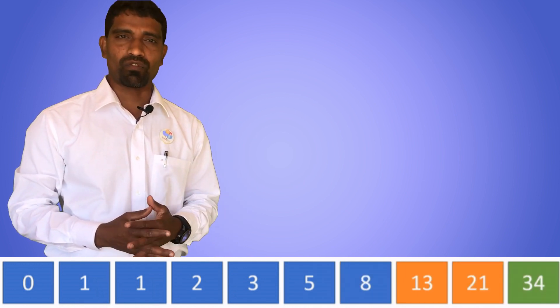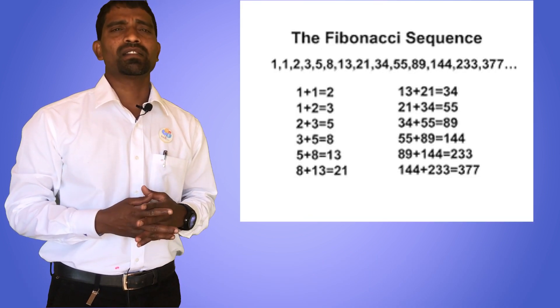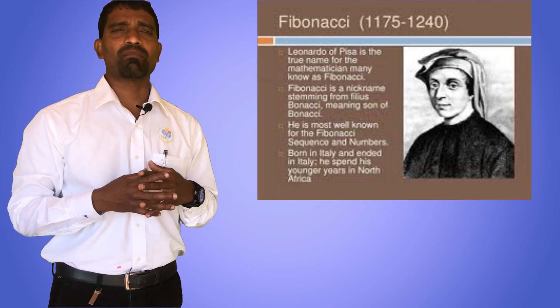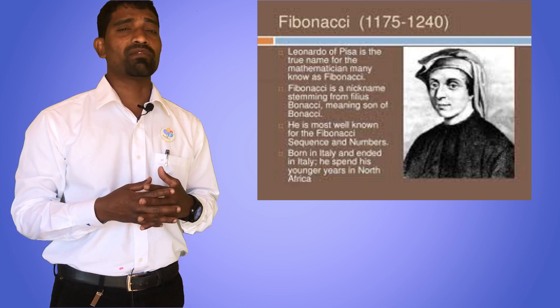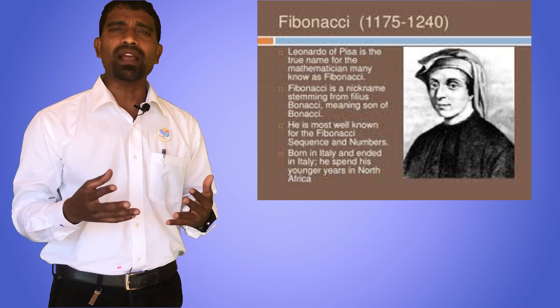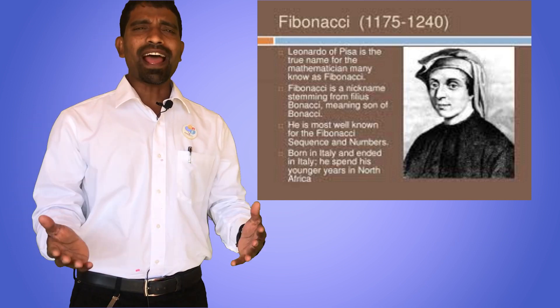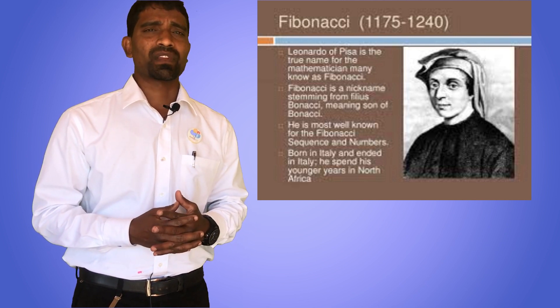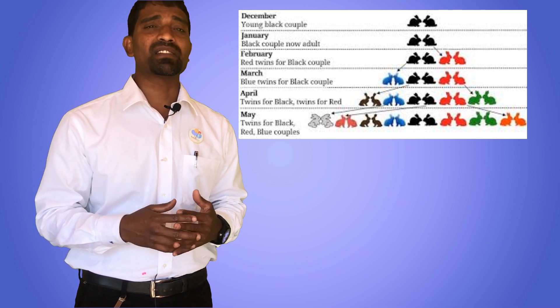This sequence is called the famous Fibonacci sequence because it was discovered by one of the famous mathematicians from Italy who lived in the 12th century, known as Leonardo Fibonacci. Fibonacci noticed that this sequence is happening all around him in nature — this is the sequence in which flowers put out their petals, plants put out their leaves, the way rabbits multiply, sunflowers put out their seeds, and so on.